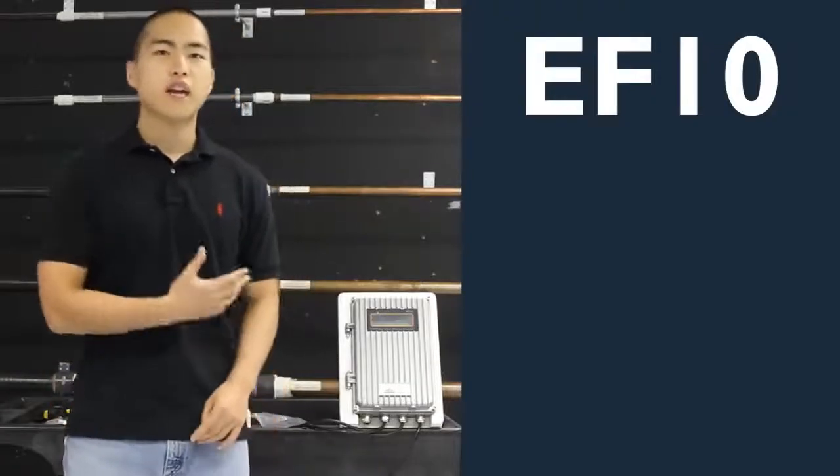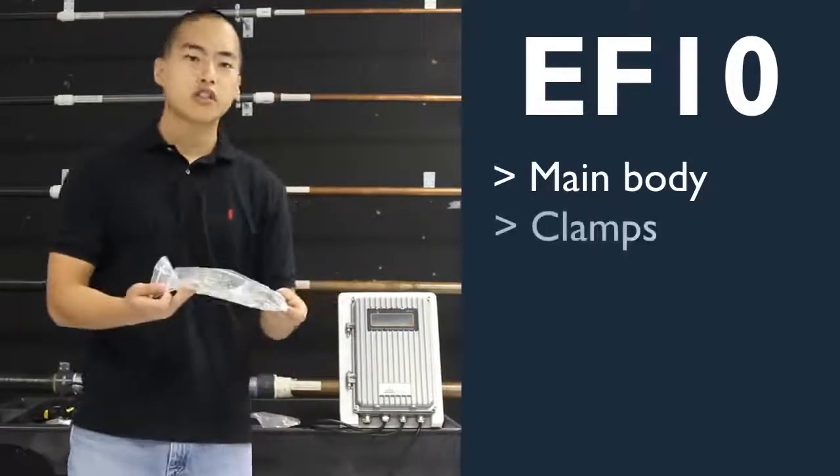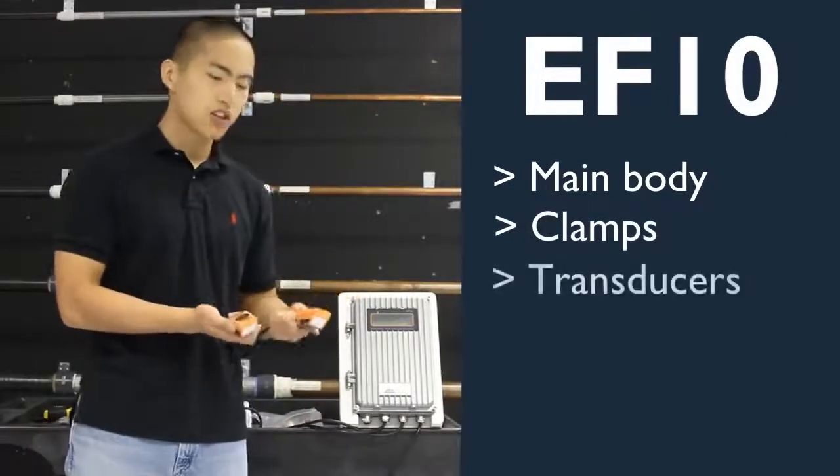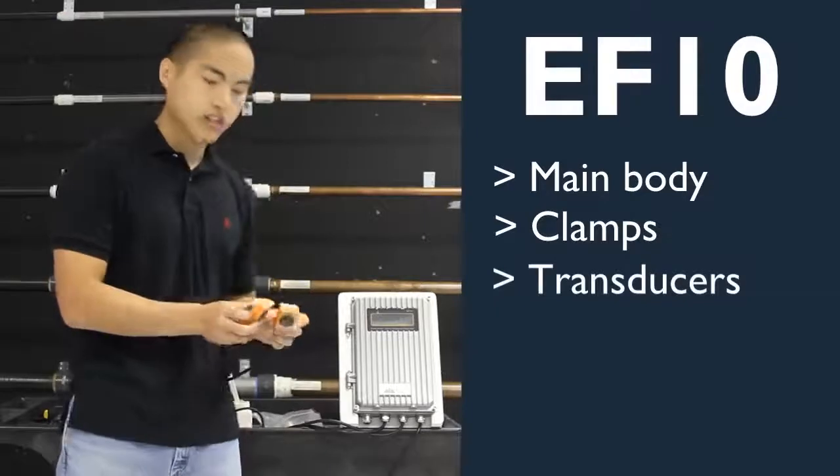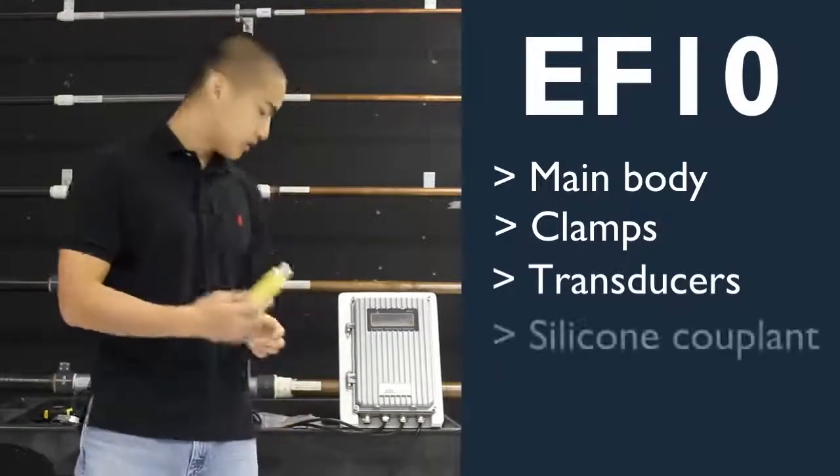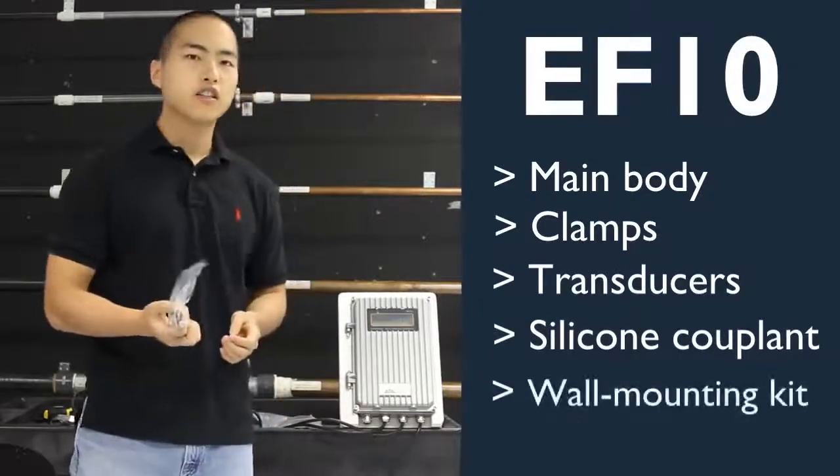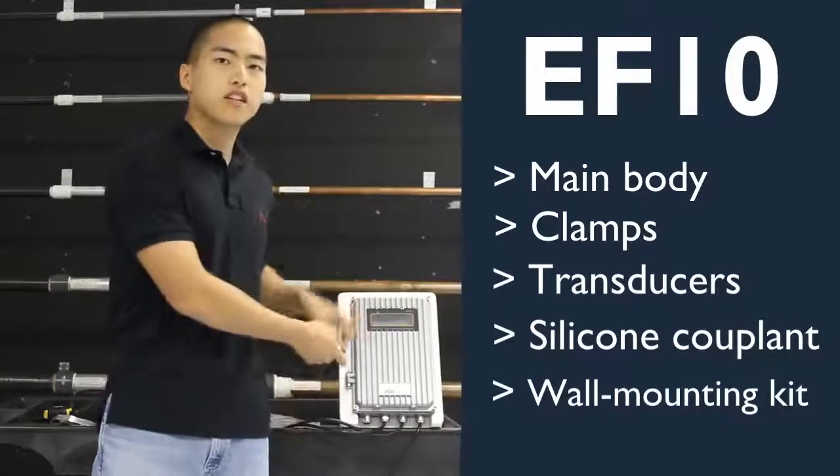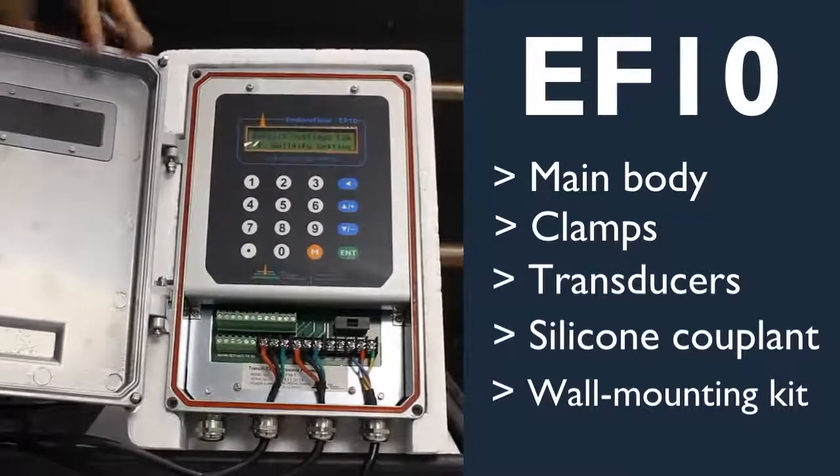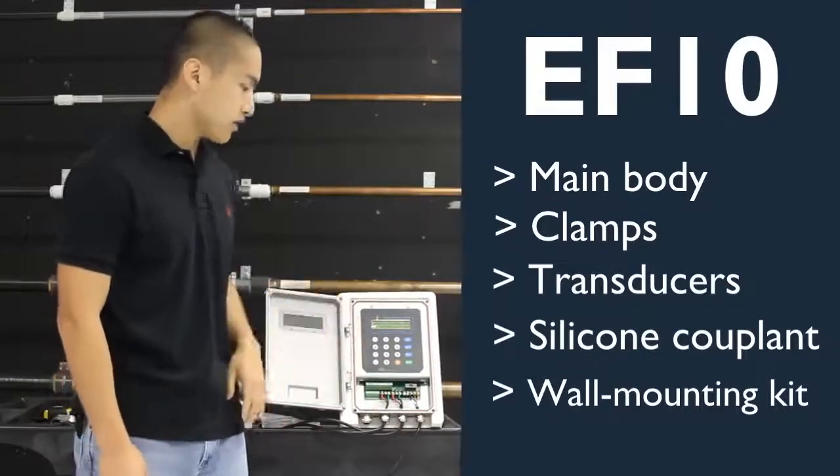Here I have the standard packing list. We have the main body, your clamps for your transducers, the transducers which go on the pipe - these are the TM1 model. You have your silicone cupland, wall mounting kit, and an allen key. You would use the allen key to open it, but today I've already opened it for you. Here you can see what it looks like once you've opened the main window.